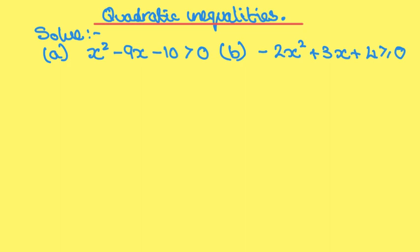Well, we're going to do this by factorization. So let's first factorize, so we get (x - 10)(x + 1) is greater than 0. Therefore, x is 10 or x is -1.